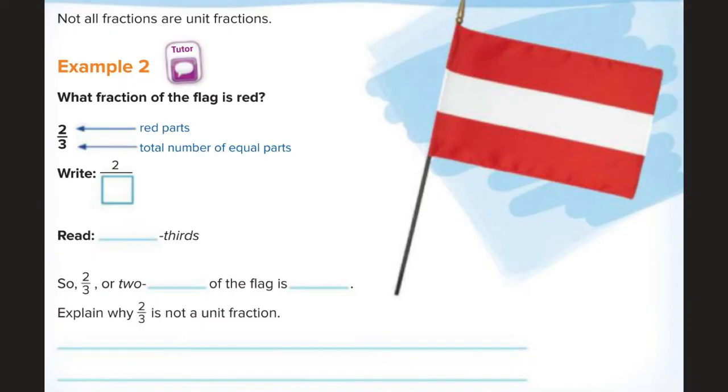All right. Example two. Not all fractions are unit fractions, right? Because, for example, here it says what fraction of the flag is red. Well, I see we have two, so this is our numerator, right? Two is our numerator. Out of how many total pieces?